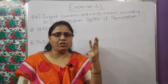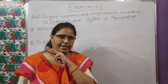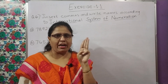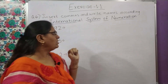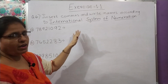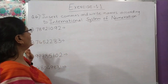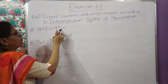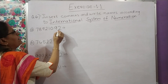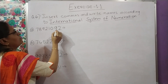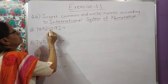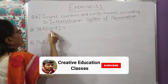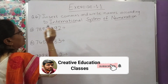International system mein 3-3-3 ki jodi banti hai, 3-3 ki pair banti hai. Toh sabse pehle hum comma lagayenge. Peechhe se ones ki place se count karenge — one, two, three ke baad comma lagana hai.